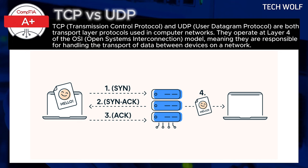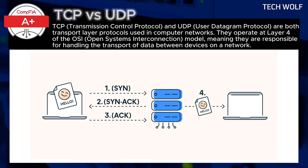The three-way handshake works like this. The sender, or client, sends a SYN, or synchronize packet, to the receiver server, asking to start a connection. The receiver responds with a SYN-ACK, or synchronize-acknowledge packet, which acknowledges the request and also asks to synchronize the connection. Finally, the sender replies with an ACK, or acknowledge packet, confirming the connection is now established.